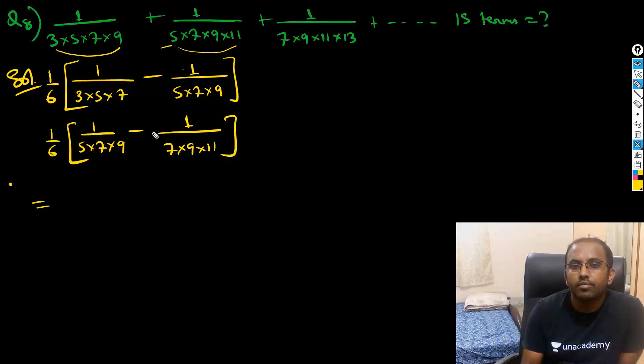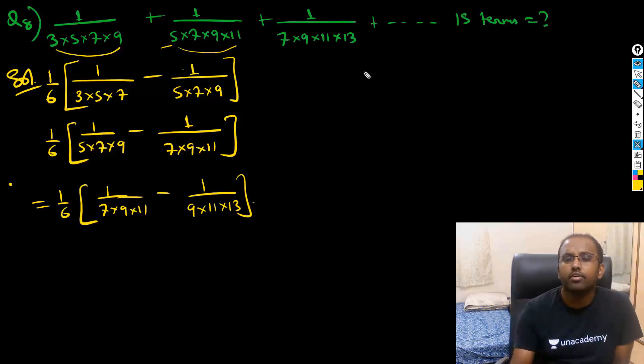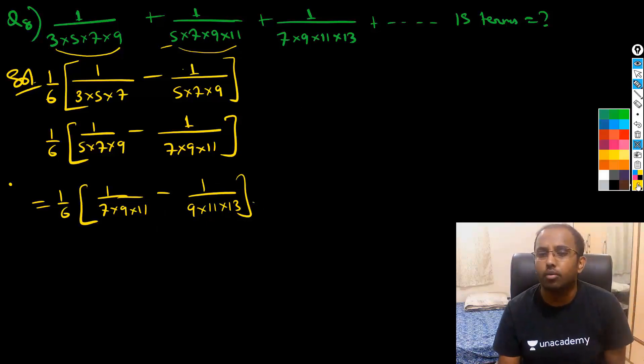Now what is this difference here? What I'm getting is 1/6 times [1/(7×9×11) minus 1/(9×11×13)]. So if you observe, I just need to write the 15th term here.